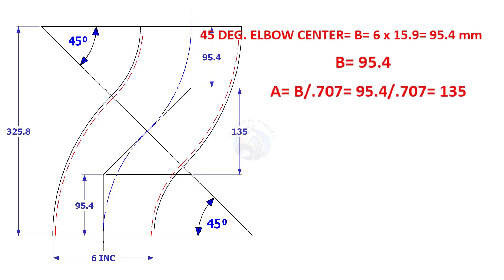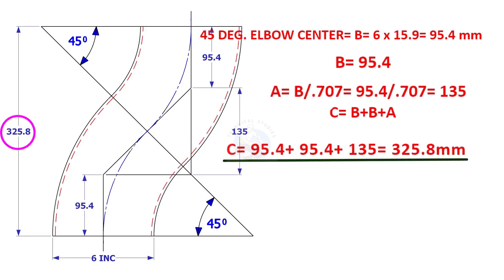A is b divided by 0.707, which is 135 millimeters. C is equal to 2b plus a, which equals 325.8 millimeters.